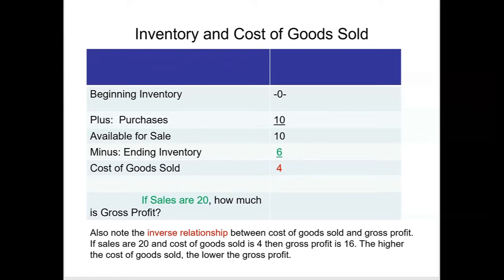Now we can determine profit. If cost of goods sold was four dollars and sales are twenty dollars, then gross profit is 16. Note the inverse relationship between cost of goods sold and gross profit. If sales are 20 and cost of goods sold is four, then gross profit is 16.